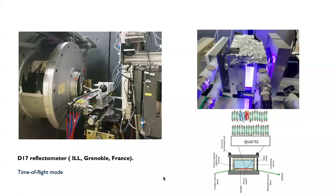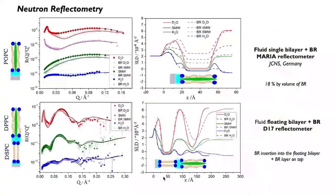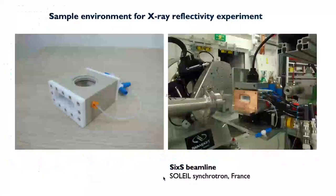For the neutron measurements, we used a quartz substrate that is transparent both to neutrons and light, so we could shine light at the interface from the quartz side. This is the setup on the D17 reflectometer at the ILL. We did measurements with our usual contrast methods — using the system in different water contrasts — on both a single layer adsorbed on the surface and on a floating layer, to detect the amount of protein inserted. Unfortunately when we switched the light on, we didn't see many changes, which was a little annoying. I'll have an explanation later on.